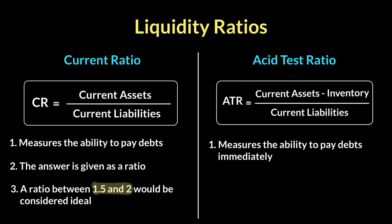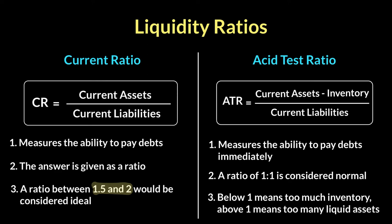When it comes to the asset test ratio, a ratio of 1 to 1 is considered normal — if you have $1 of current assets to pay for $1 of current liability, that is alright, because you still have your inventory. If you fall below 1, that means you have too much inventory, which is not easy to sell and convert into cash. If it's above 1, that means you have a lot of cash sitting in your business not making any money — you should invest, give bonuses, or do whatever you need to put it to good use. You should maintain an asset test ratio of 1 to 1 and a current ratio of 1.5 to 2 to 1.